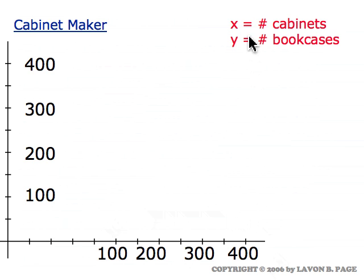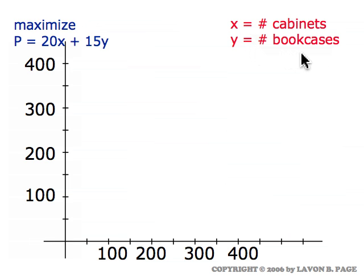So we commence as usual by naming our variables in the problem. X will represent the number of cabinets we're going to make. Y the number of bookcases. The profit function, if you go back and look at the word problem, will be P equals 20X plus 15Y simply because the profit is $20 for each cabinet and $15 for each bookcase.